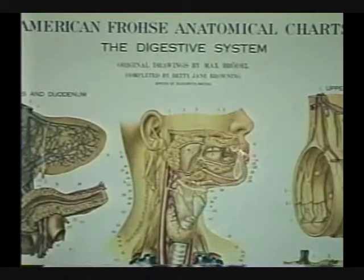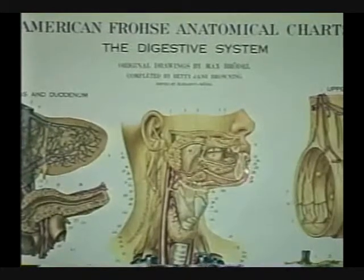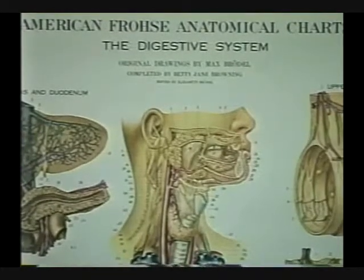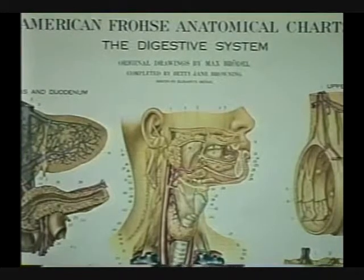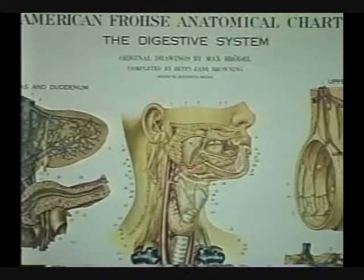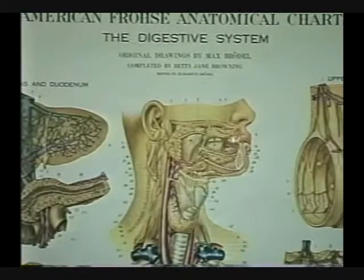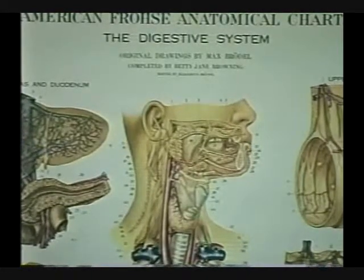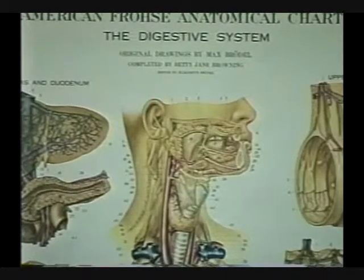Where do the lips start and end? They start all the way up here and go all the way down to the base of the chin - the mental protrusion, to be specific. And what is the red part that shows called? The red margin, also known as the vermilion border.